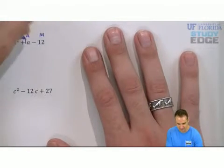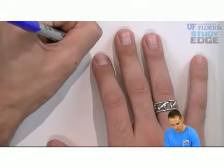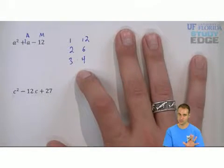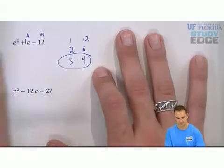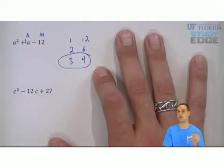One and 12, two and six, three and four, four and three, but we're done. Three and four will give you it. But again, it's a negative 12. So that means one is positive and one is negative.